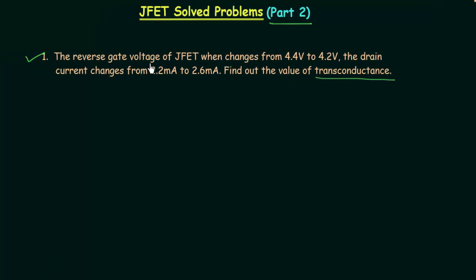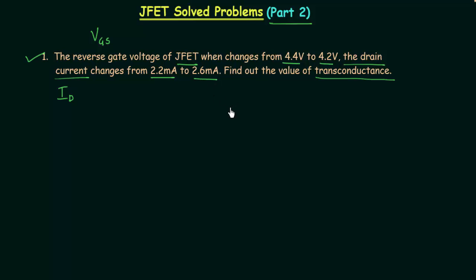The reverse gate voltage, meaning Vgs of the JFET, changes from 4.4 volts to 4.2 volts. The drain current ID changes from 2.2 milliamps to 2.6 milliamps. In this scenario we have to calculate the value of transconductance.